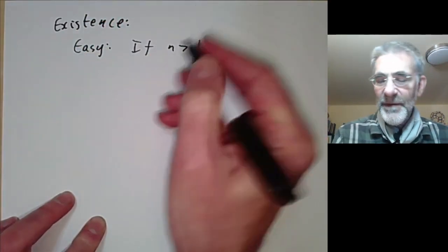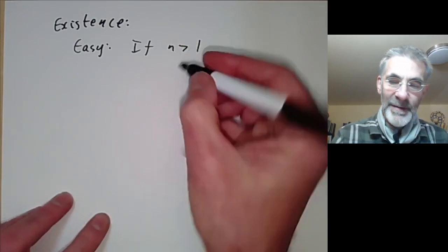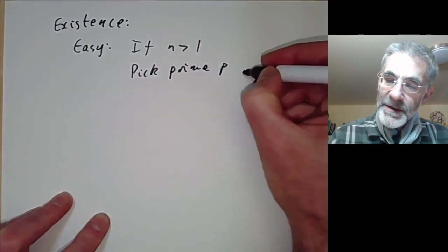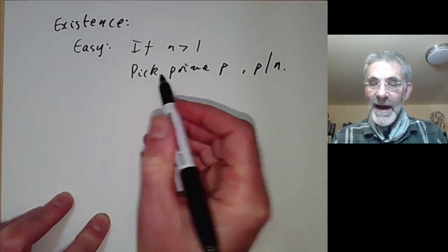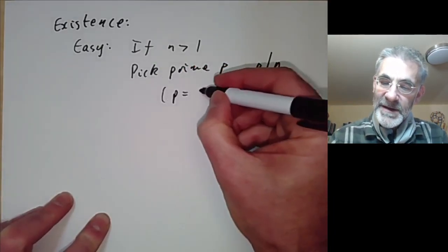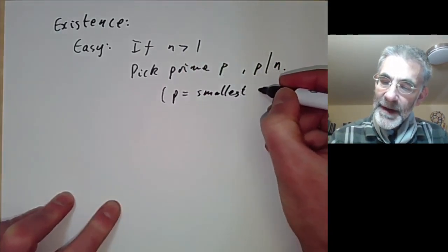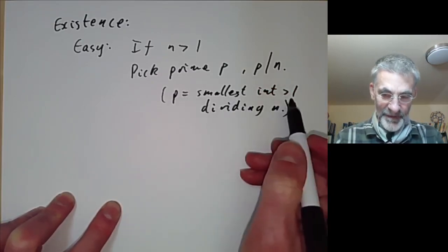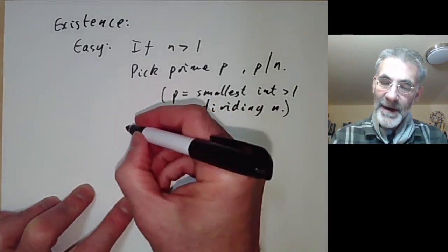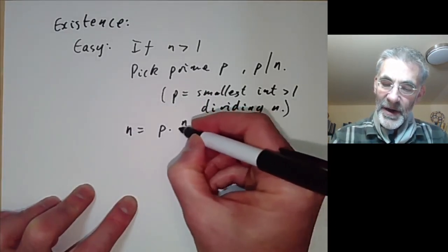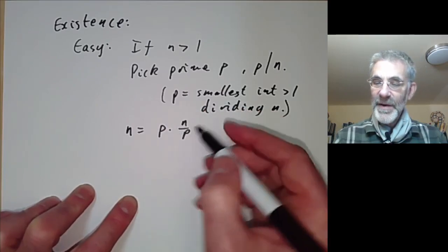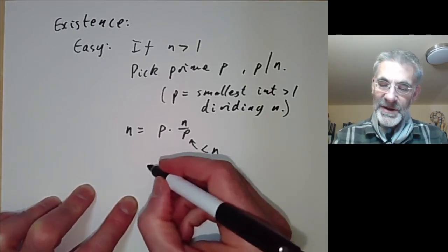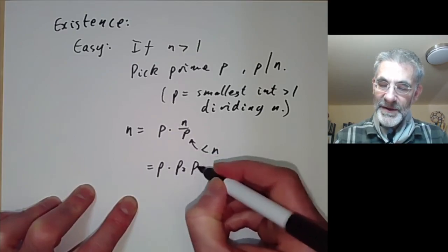Suppose n is greater than one. If n equals one we're finished because it's a product of no primes. If n is greater than one, we pick a prime p dividing n — namely the smallest integer greater than one dividing n, which you can easily check must be prime. Then n equals p times n/p, and since n/p is less than n we apply induction to write n as p times p2 times p3 and so on.